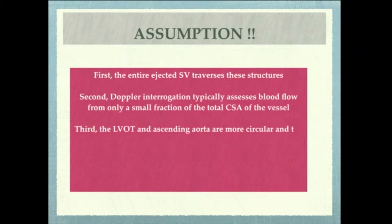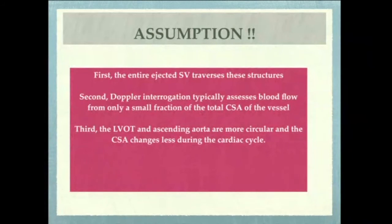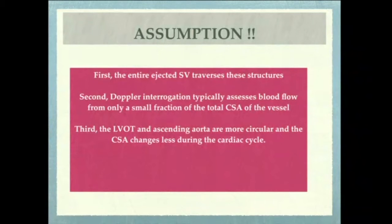The first and foremost assumption is that the entire ejected stroke volume traverses that structure. In the mid-esophageal long axis view, some blood passes through the coronary arteries, but we consider the complete amount of blood is traversed to that structure. The second assumption is that Doppler integrations typically assess blood flow from only a small fraction of the total cross-sectional area — we are considering just one wedge part through which the blood is passing.